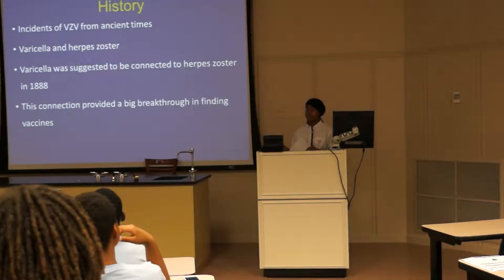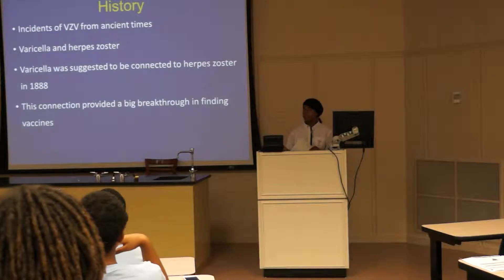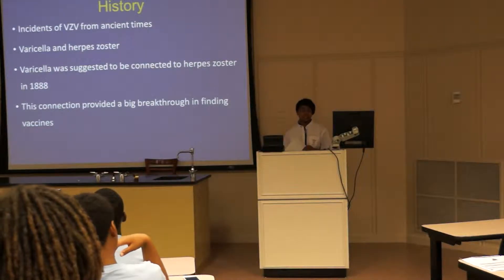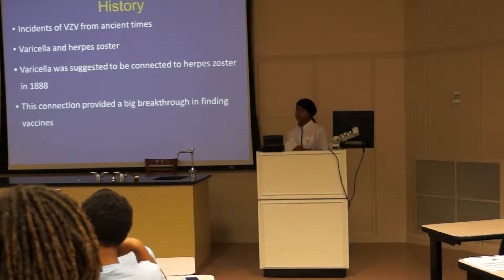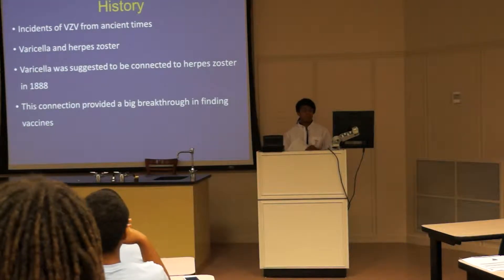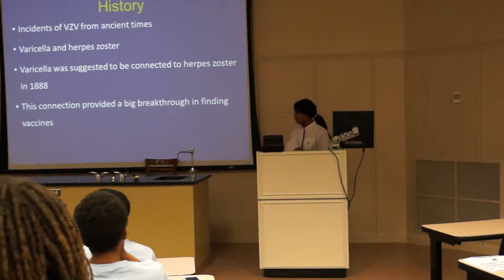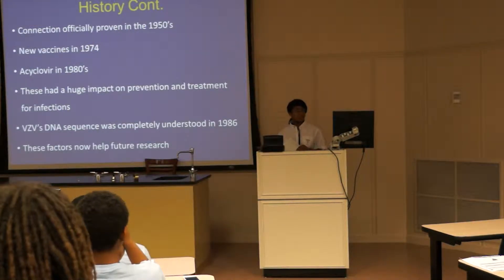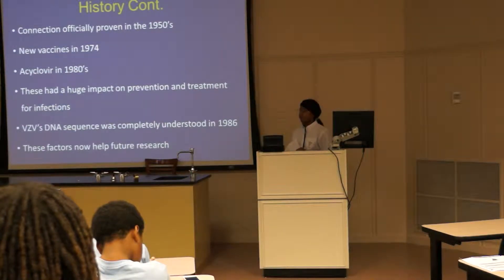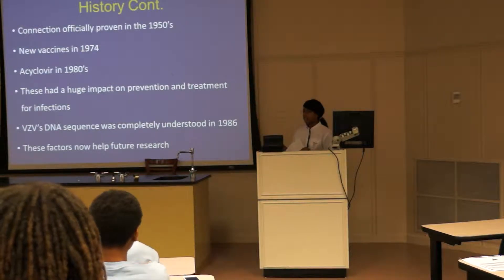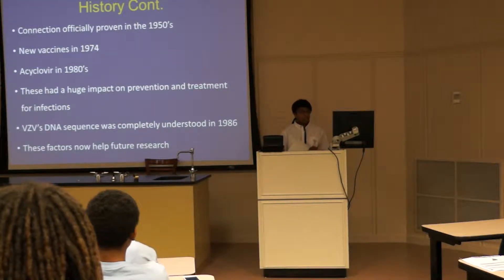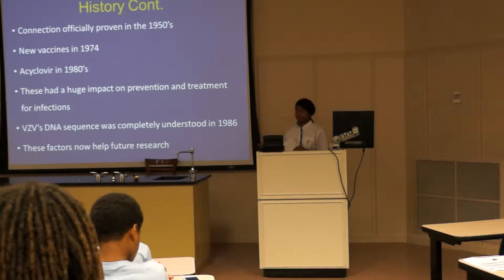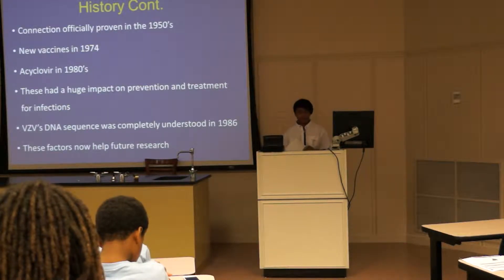History. Incidents of Varicella-Zoster Virus have been found since ancient times. These incidents are what we identify today as Varicella and herpes zoster. Varicella was first suggested to be connected to herpes zoster as both being infections from Varicella-Zoster Virus in 1888. This connection provided a big breakthrough in finding vaccines for both infections. The connection was officially proven in the 1950s. New vaccines were created in 1974. One of these vaccines is Acyclovir, which was made in 1918. These vaccines had a huge impact on prevention and treatment for the infections. Varicella-Zoster Virus's DNA sequence was completely understood in 1986, and these discoveries now help future research.